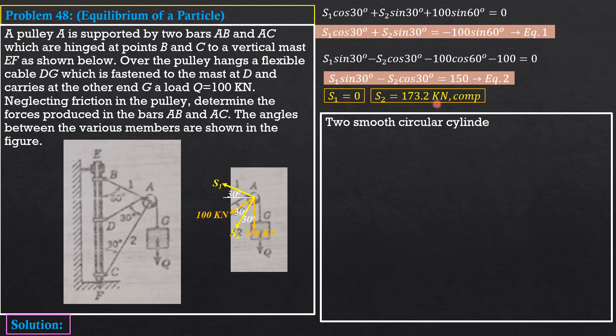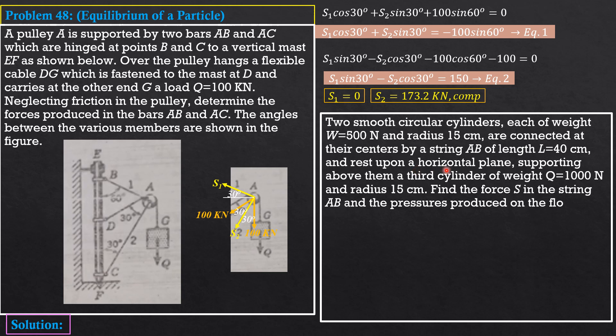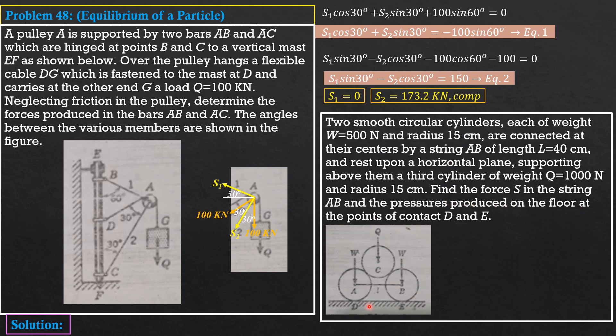Then, for your part, two smooth circular cylinders, each of weight W 500 newtons, and radius 15 cm are connected at their centers by a string AB of length L 40 cm. And rest upon horizontal plane, supporting above them a third cylinder of weight Q, 1,000 newtons, and radius 15 cm also. Find the force S in the string AB and the pressures produced on the floor at the points of contact D and E. So, verify, post the video, solve the problem, and verify that S, the force in this string, is 447.2 newtons, and the reactions here are ND equals NE equals 1,000 newtons. So, that's it for your part.